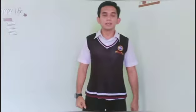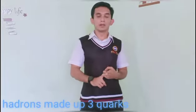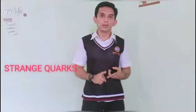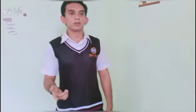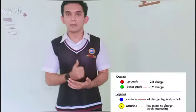Furthermore, in 1964, Murray found that hadrons are actually made up of only a few different particles, which we call quarks. There are three kinds of quarks: up quarks, down quarks, and strange quarks. So we can also say that the two most fundamental types of particles are quarks and leptons. Quarks and leptons are divided into six flavors corresponding to three generations of matter.